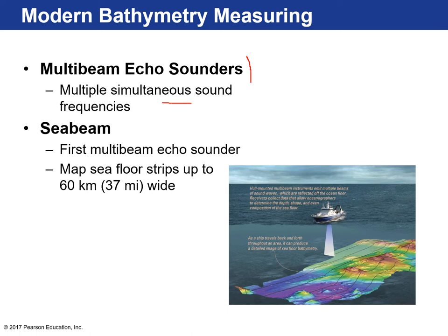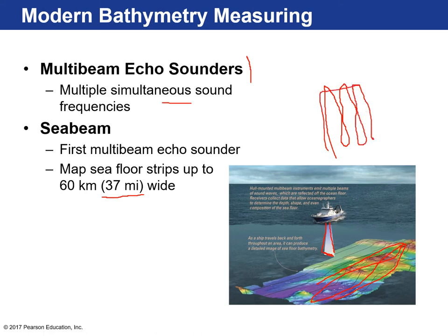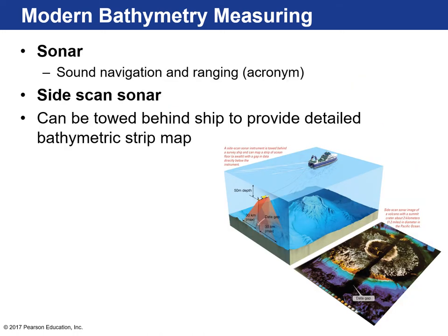Later on, multi-beam echo sounders were invented — using multiple simultaneous sound frequencies. A boat zigzags back and forth, with simultaneous sound frequencies bouncing off the seafloor, and you get swaths of data that you stitch together to create a larger map. Those swaths can be about 37 miles wide. It's kind of like mowing a lawn — you go back and forth, overlapping a little bit — and then you get a map of the entire area.